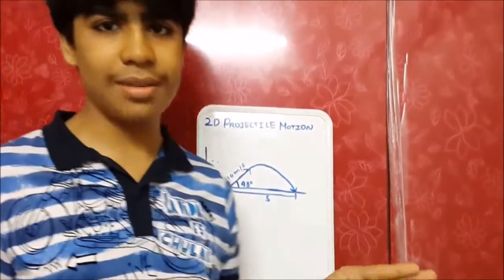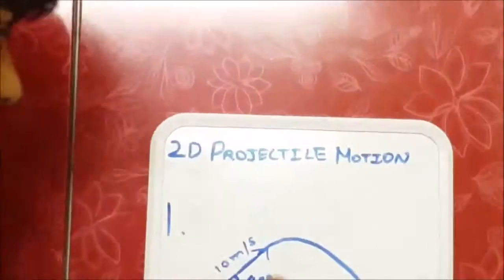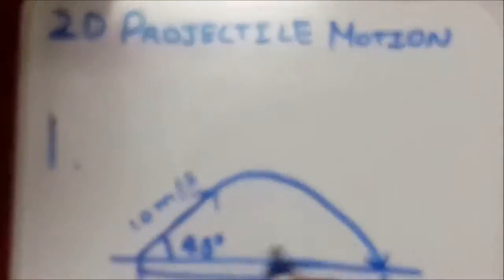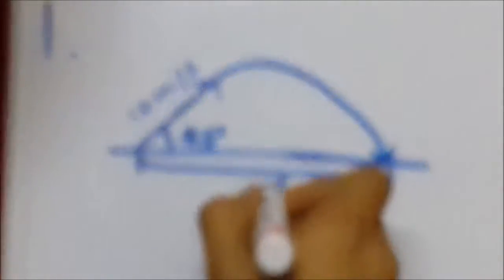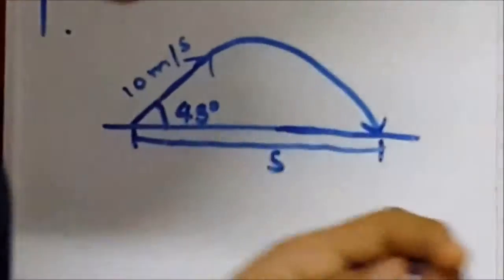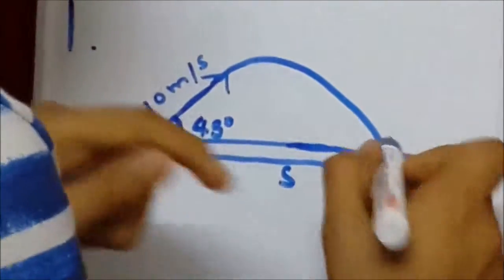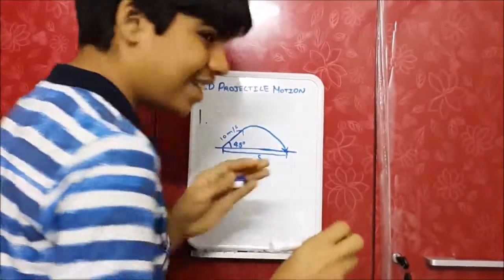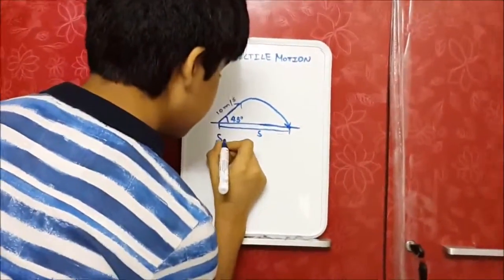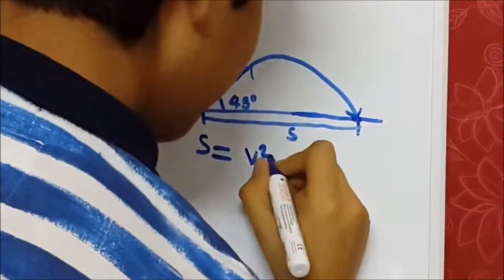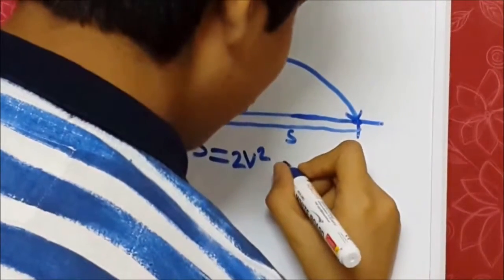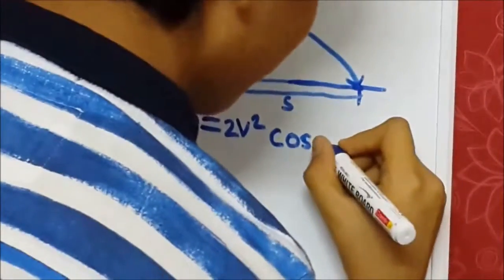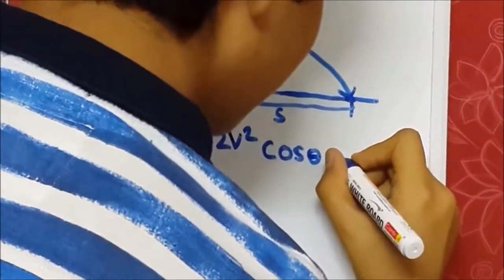And in this case, remember that air resistance is negligible, otherwise we'll have to do a whole lot of variables. Otherwise it's pretty easy to do sine, cosine and stuff. Now it goes and it lands at a flat ground and it lands at a distance of s from the launcher. So the formula is s equals 2 times velocity squared times cos theta times sin theta.